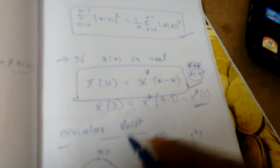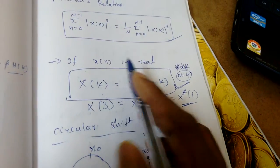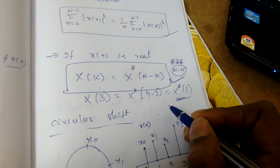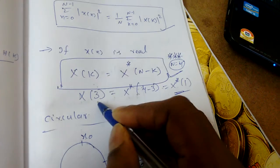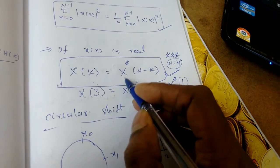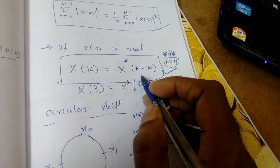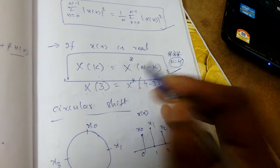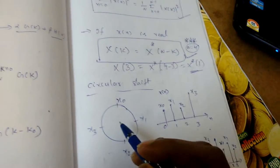This property is useful in GATE exam questions where x(n) is given and you are asked to find X(8) or X(15) etc. Always remember: X(K) = X*(N - K) — this is a very important property.